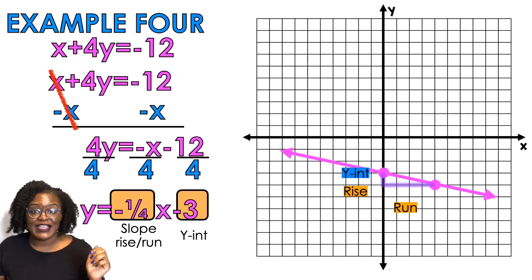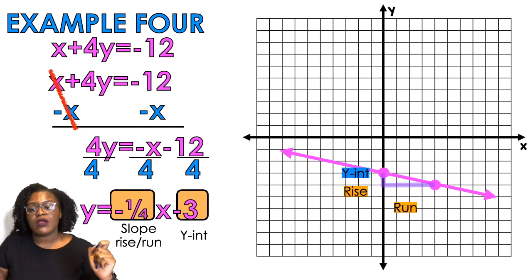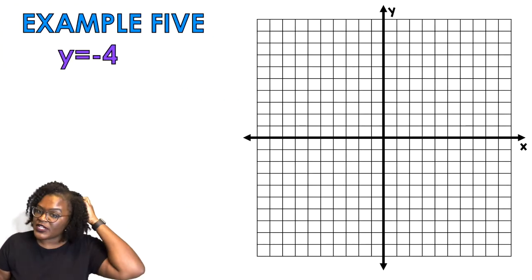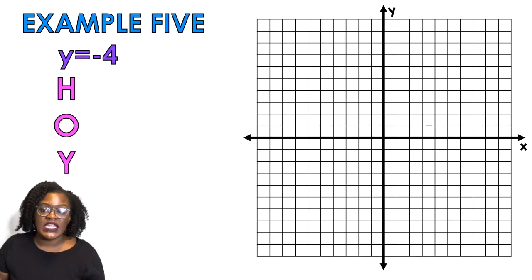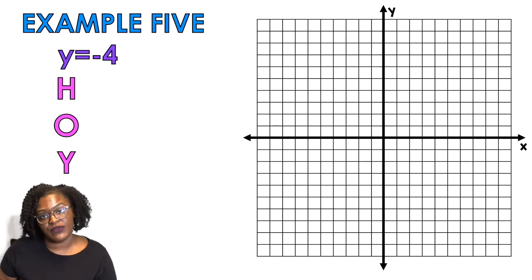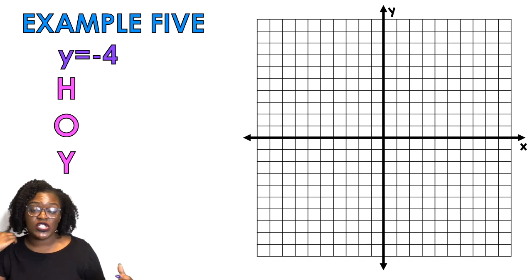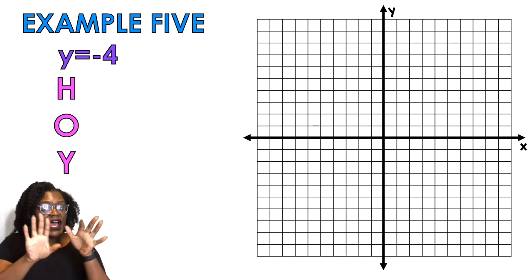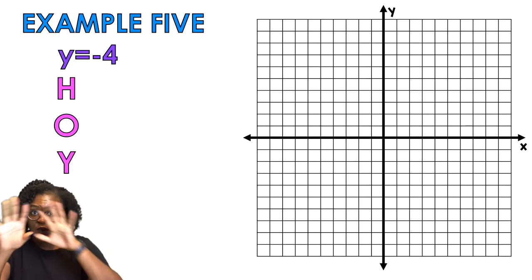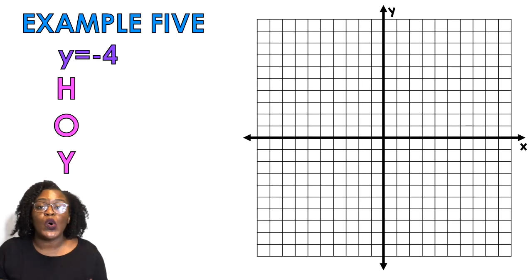Okay, so let's say you have special case lines. So I have a HOI line and I have a VUX line. So when the equation is y = -4 you notice that there's no x in this equation, right. This is a special case line. When you just have y and a number, there's no x rolling up in there, we use an acronym called HOI.